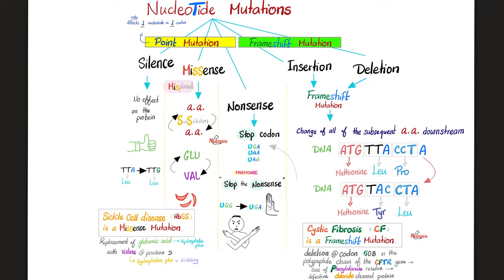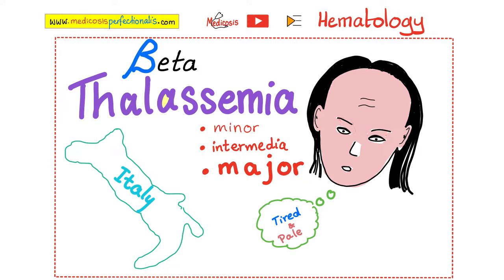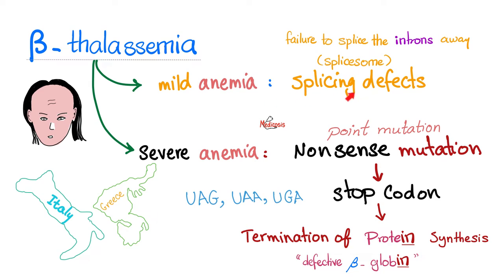Quick review: sickle cell disease is a missense point mutation; cystic fibrosis is a frameshift mutation — namely deletion. Beta thalassemia, however, is a splice site mutation — a spliceosome defect. A splice site defect means the introns cannot be spliced out, so they persist in the RNA and interfere with protein synthesis, meaning we cannot make beta globin. That's why we call it beta thalassemia — beta because of the defect in the beta globin protein, and thalassemia because it's an anemia, a blood disorder.